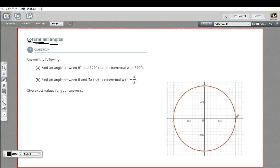390 degrees, we'd start here, we'd go around a full circle, that'd be 360. And then 390 minus 360 leaves 30 more. So we'd go an additional 30 degrees, and we'd end up right here.